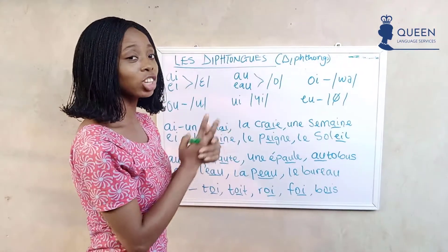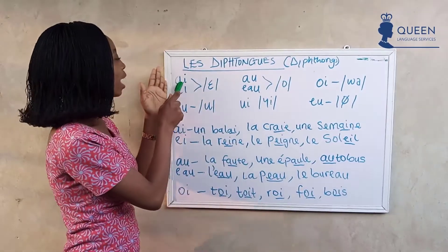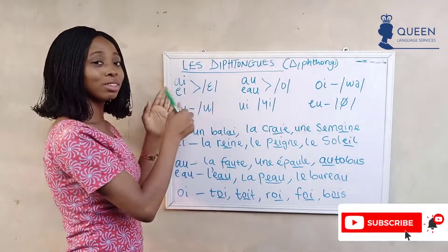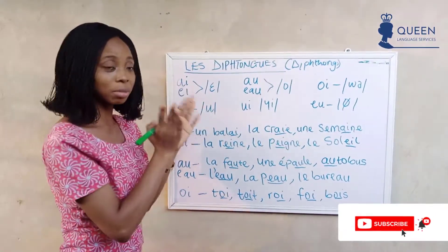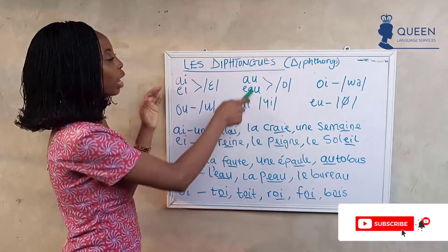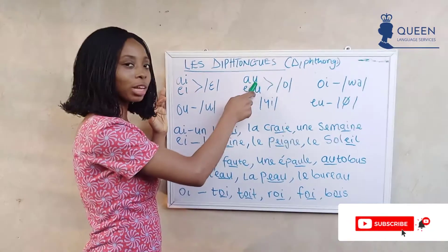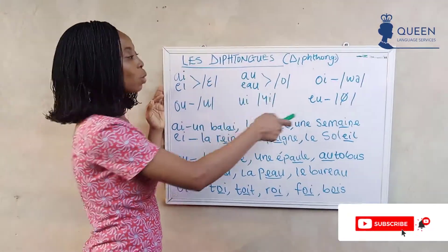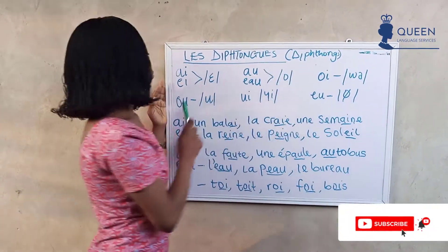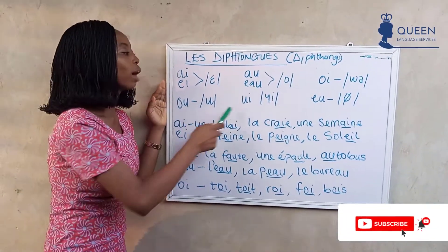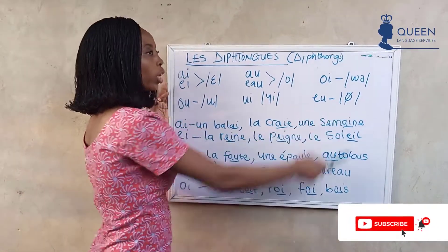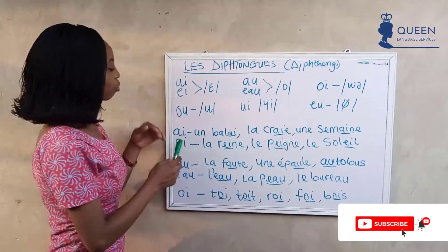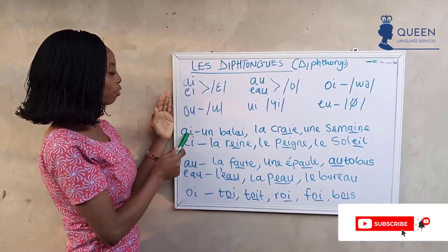So these are the French diphthongs. We have them giving the sounds 'eh', 'o', and others, but with different spellings that produce the same sounds. We have the 'au' that gives 'o', the 'eau' that also gives 'o', the 'oi', the 'ui', and the 'eu'.